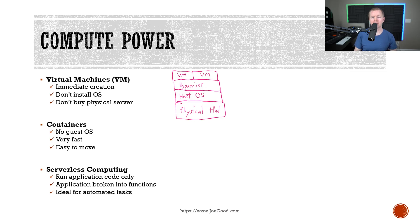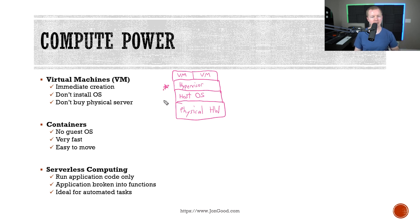The first is compute power. A virtual machine is the first thing that we can use compute power for, and this allows for immediate creation of virtual machines. So we can immediately deploy them, and we don't need to install an operating system on a physical server. If you look here on the screen, this is kind of what a virtual machine setup looks like. So we have this hypervisor that we need, and we install that on top of the host OS, so maybe Windows Server or Linux or something like that. But you would install a hypervisor, and then you install the virtual machines on top of that.